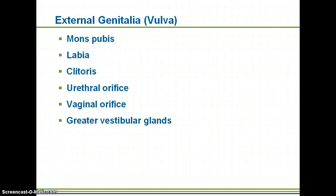Now we'll be finishing up with the female reproductive system. We'll look at the external genitalia, and then we'll look at oogenesis, which is the formation of the ova, or the egg. Collectively, the external genitalia in females is called the vulva, and it includes the mons pubis, the labia, the clitoris, the urethral orifice, vaginal orifice, and the greater vestibular gland. Orifice basically refers to the openings.